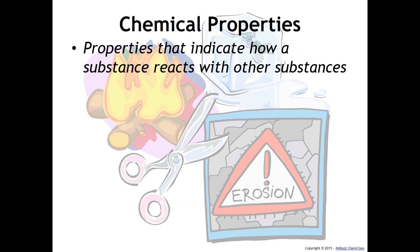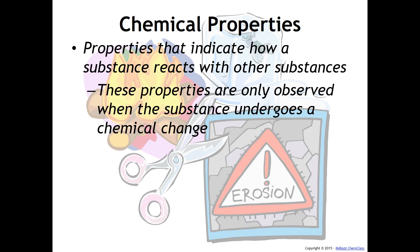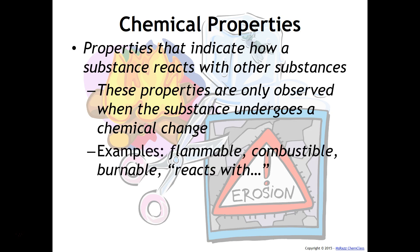Chemical properties, on the other hand, are properties that indicate how a substance reacts with other substances. These properties are only observed when the substance undergoes a chemical change. For example, if a sample of matter is considered flammable, combustible, burnable, or reacts with something, these are going to be considered chemical properties.